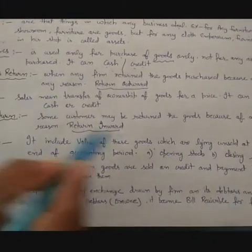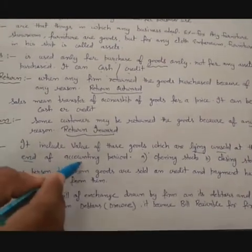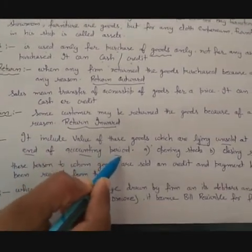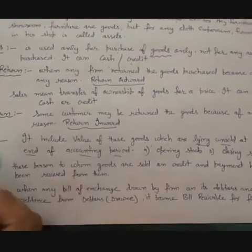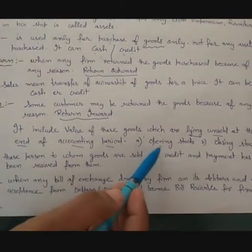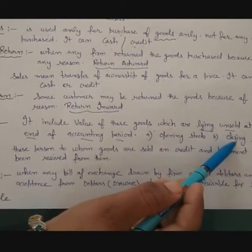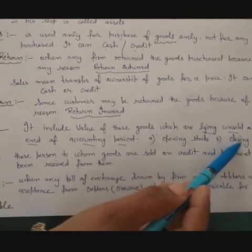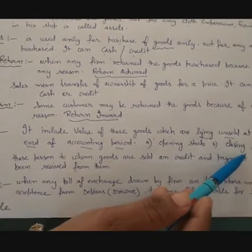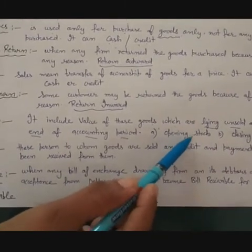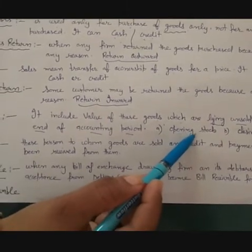The next term is Stock. Stock refers to goods which are lying unsold at the end of the accounting period. At the end of the year, we count how many unsold goods remain — that is known as Stock. There are two types: Closing Stock, which is the unsold goods at the end of the accounting year, and Opening Stock, which is that same closing stock carried forward as the opening stock for the next year.